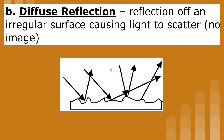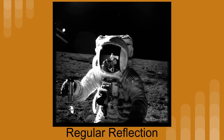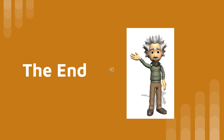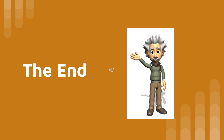Think about it: when a lake is calm, you can see your face reflected off the surface of the water. But when the lake is turbulent, you no longer see your image. If you look at an astronaut's face shield, you can see the reflection of another astronaut. Since this reflection produces an image, it's an example of regular reflection. This is the end of the presentation on an intro to light and reflection.